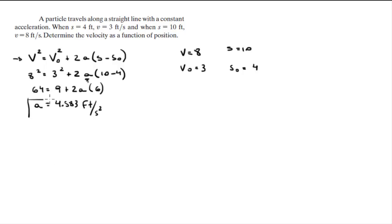Now that we have the acceleration, which is a constant, we're going to use the same formula: v squared is equal to v naught squared plus 2 times a times s minus s naught, to find a formula for the velocity.